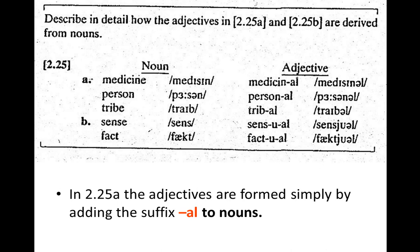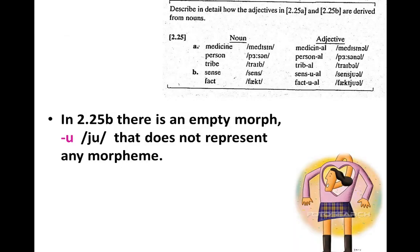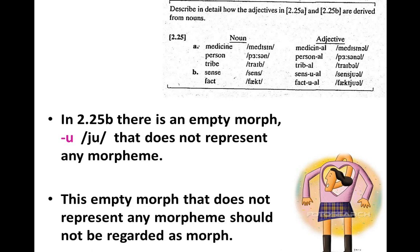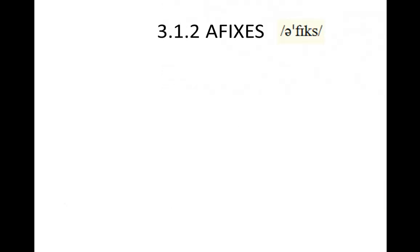In exercise 2.25b there is an empty morph — a sound in the morph that we cannot represent in the morpheme. We call it an 'empty morph' because it does not represent any morpheme in the word. This empty morph should not be regarded as a morph — it is a different classification, and we have to remember this concept.